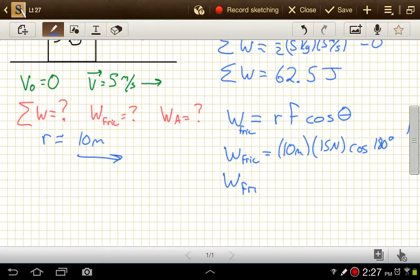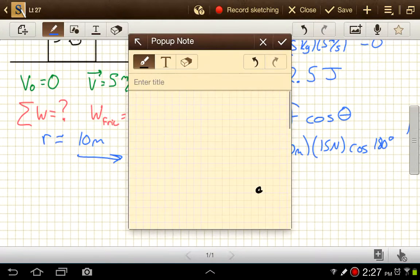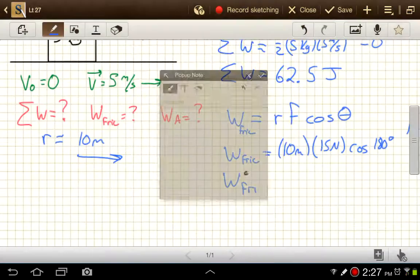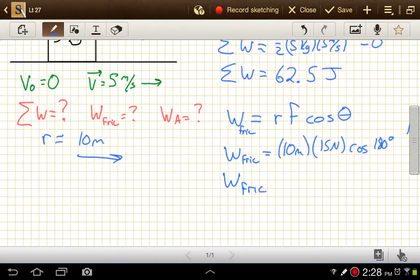180 degrees, when we do the cosine of 180 degrees, we just get negative 1. So this would be negative 150 joules. So that's one answer here, another answer here.